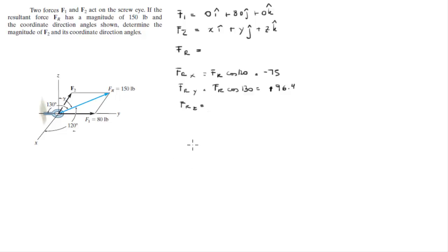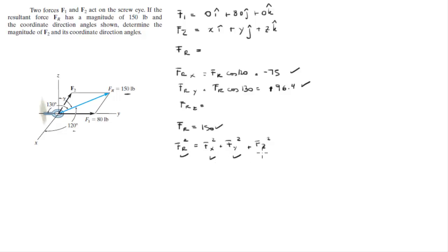Now to find the Z component of FR, you know that FR equals 150 as given, and the magnitude equation is FR² = Fx² + Fy² + Fz². Plugging in those values and solving, you get that Fz is equal to 87.1. So now we can write the full resultant force as: FR = -75i + 96.4j + 87.1k.